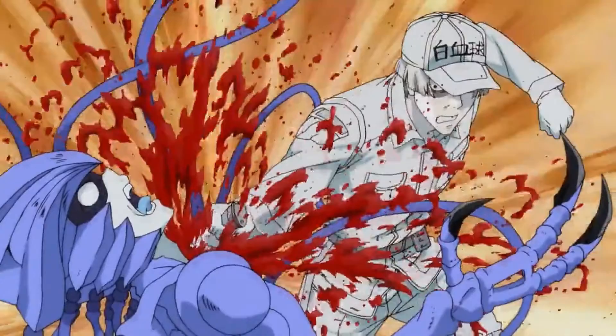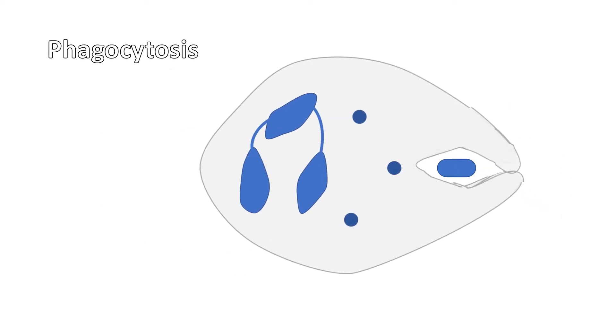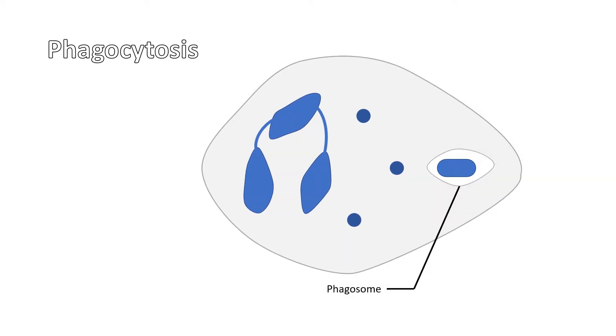Immune cells don't fight bacteria like this. In reality, immune cells are 10 times the size of bacteria and can engulf them in a process called phagocytosis, forming a phagosome.